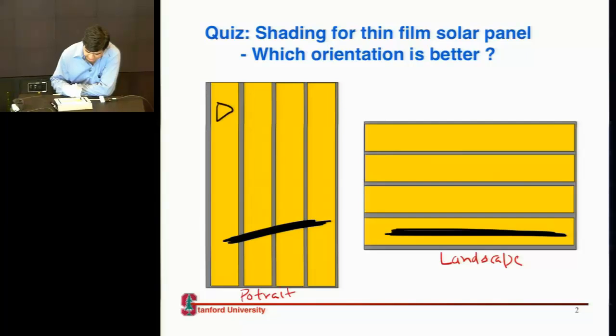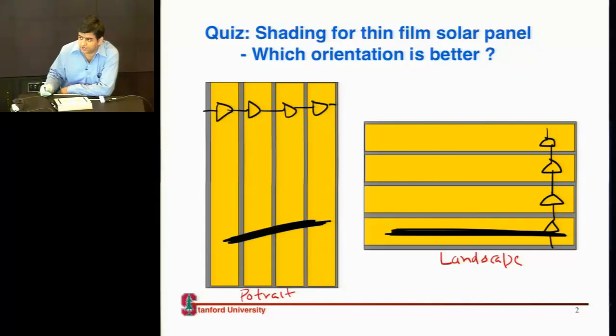So yeah, let me draw the cells actually. So the cells are each of these long things over here—each of these things is one cell. So I've drawn over here only four cells. Similarly over here are also these four cells which are series connected. So in looking at this picture, now this kind of shading would essentially decrease the efficiency of each of these cells. And similarly over here as well, it would decrease the efficiency of one of these cells in the landscape case. So does anybody want to add to that argument?